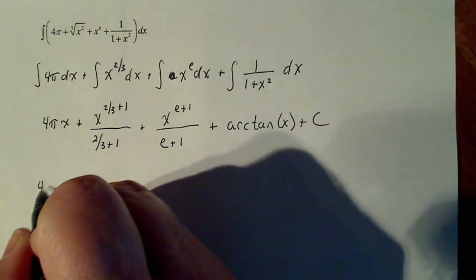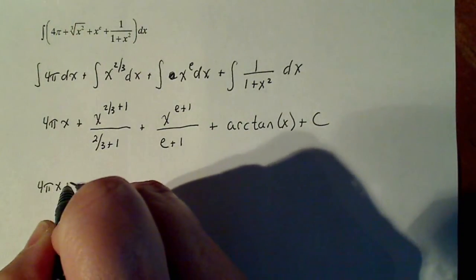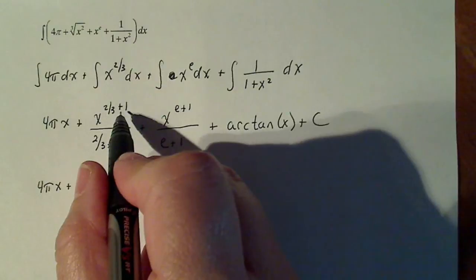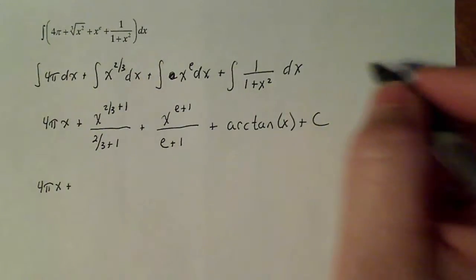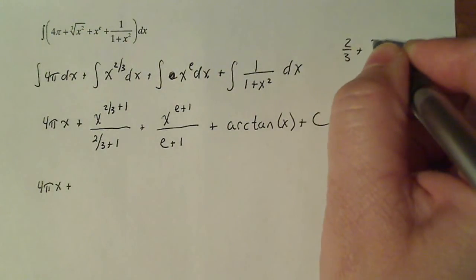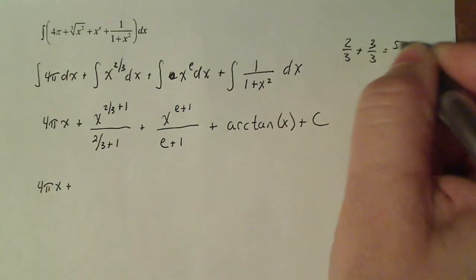Now I'm just going to do one more step to do a little simplifying. I know that two thirds plus one, well let's do it off to the side. Two thirds plus one is two thirds plus three thirds, which is five thirds.